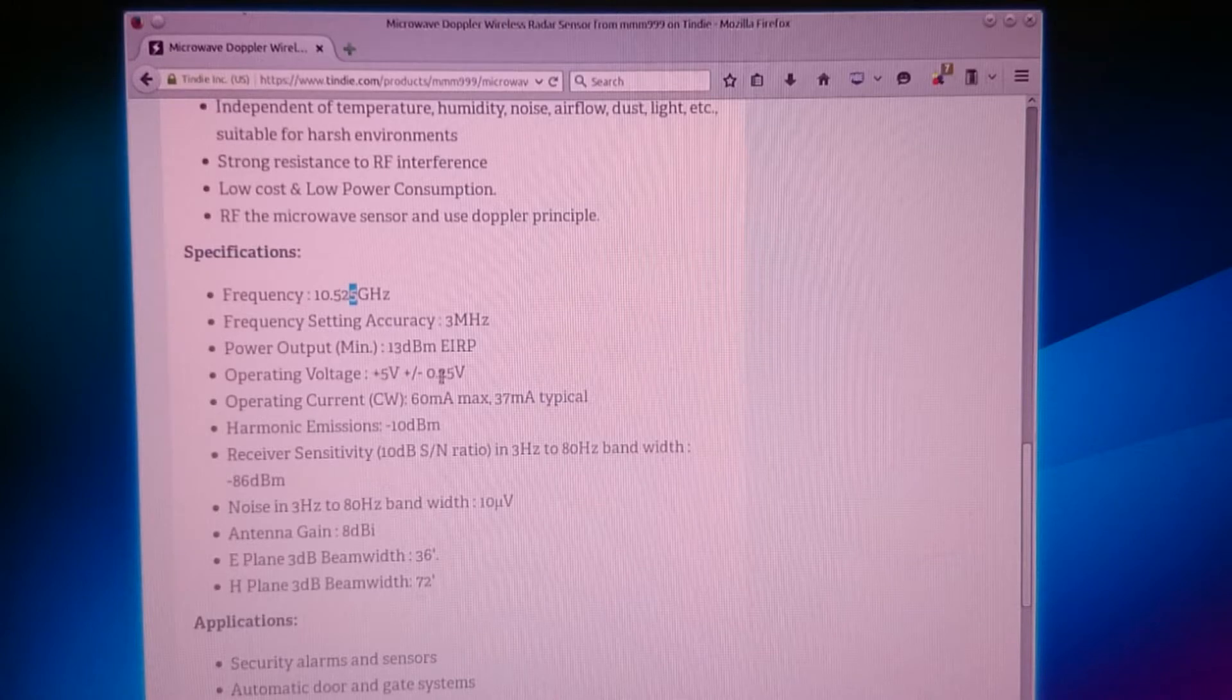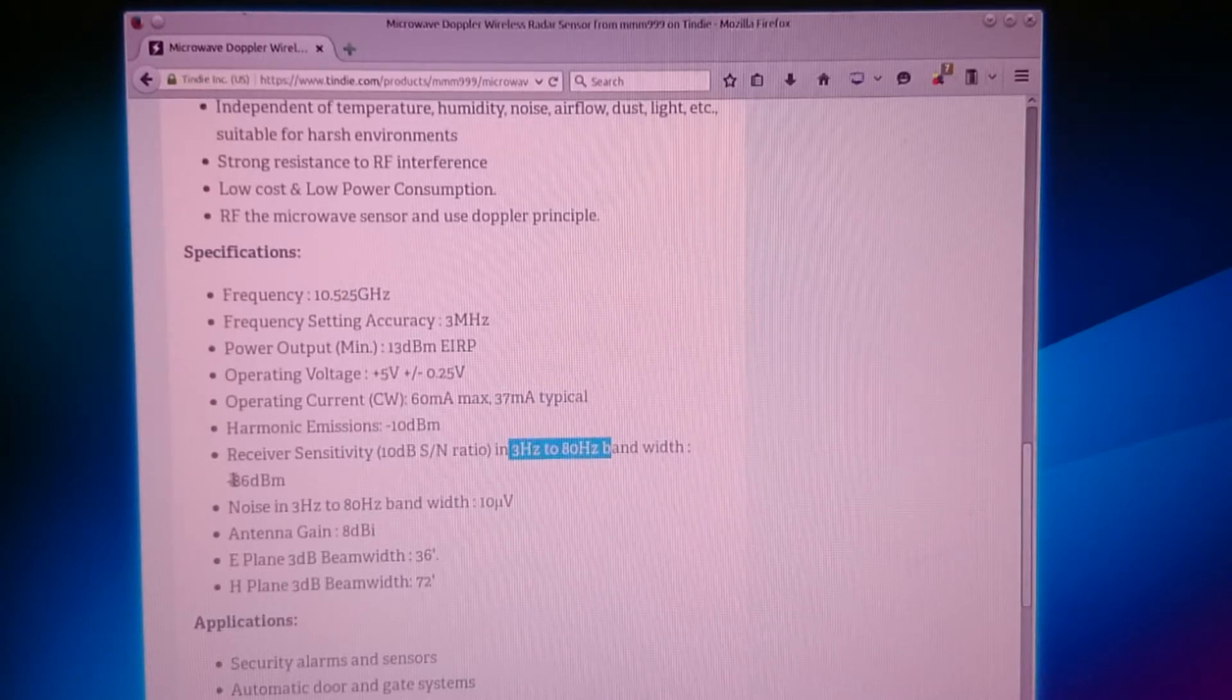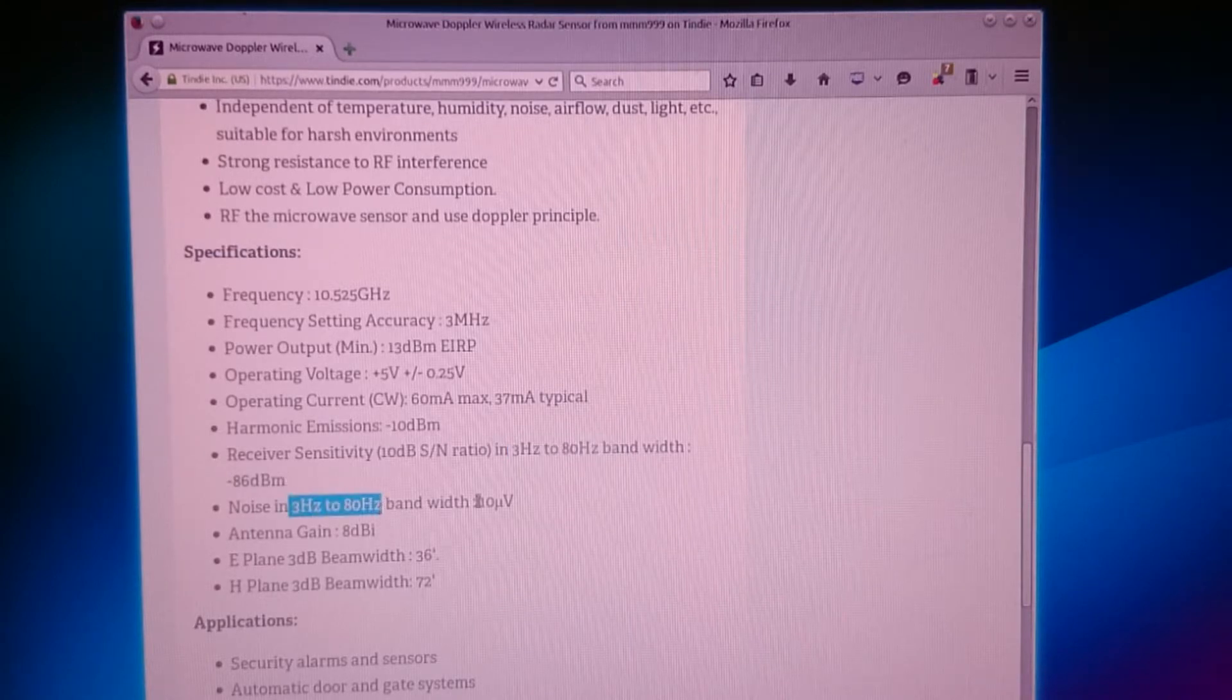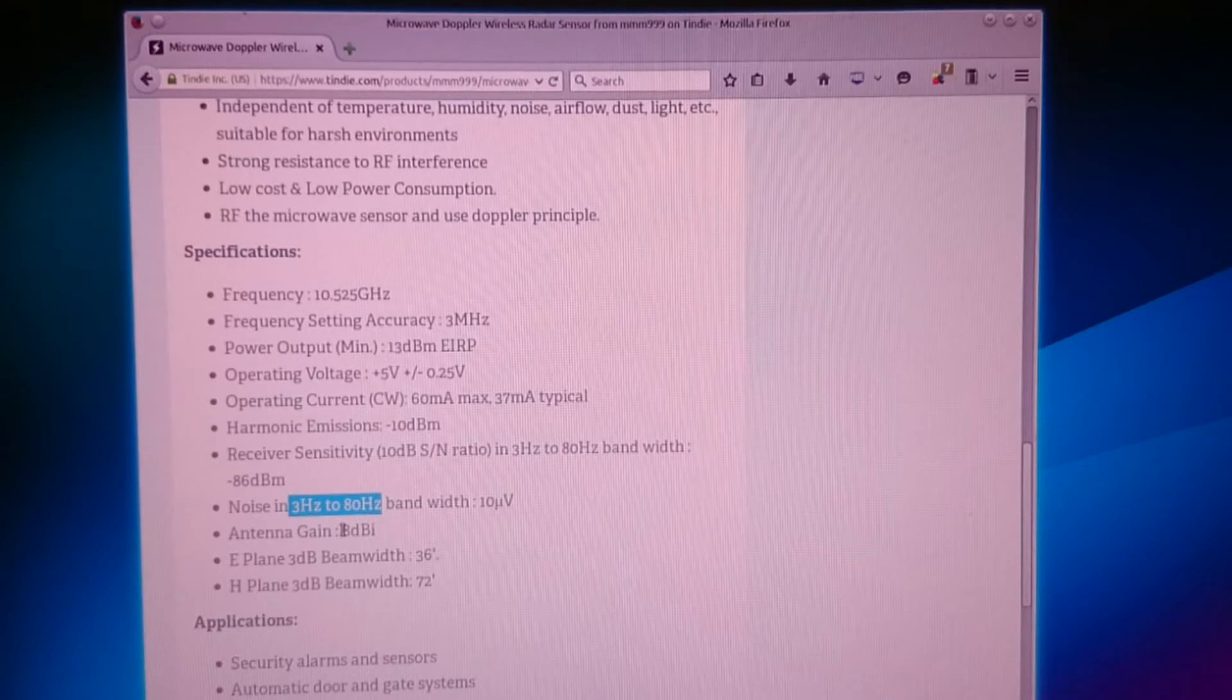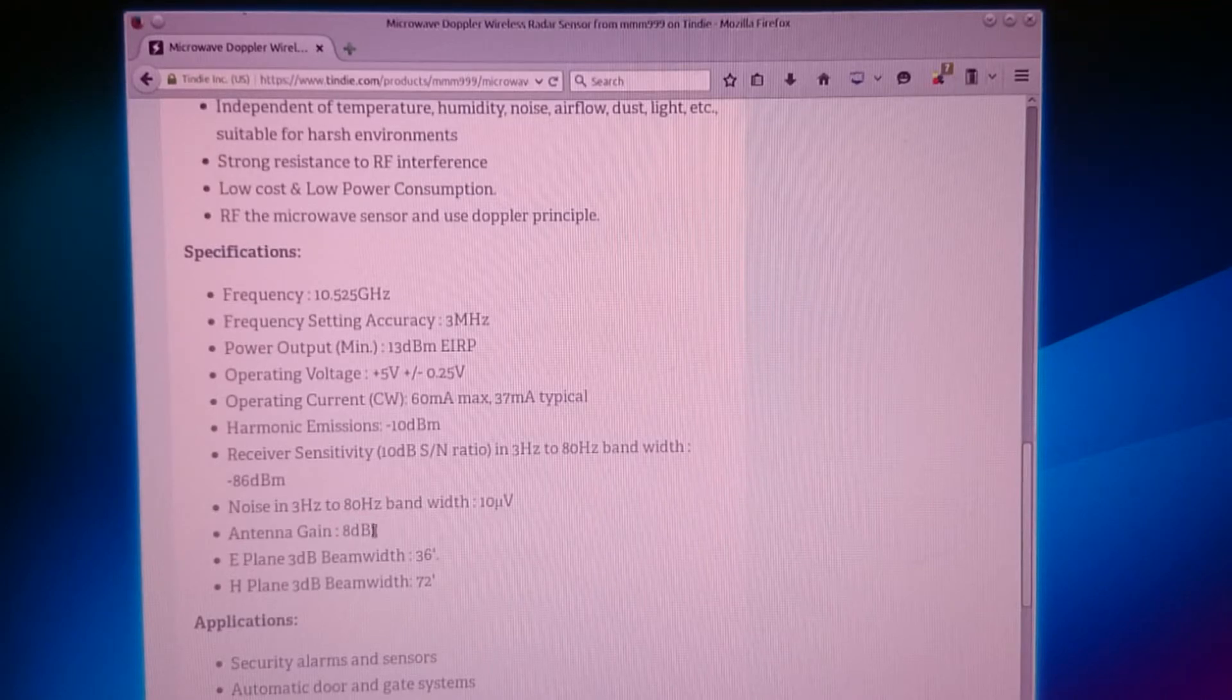Its operating voltage is 5 volts. It draws up to 60 milliampere. We have some harmonic emissions. The receiver sensitivity in this band is minus 86 dBm. The noise in this bandwidth is 10 microvolts. The PCB antennas have a gain of 8 dBi.